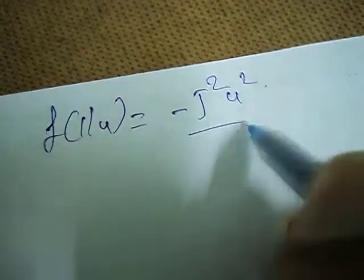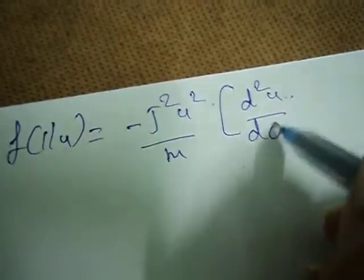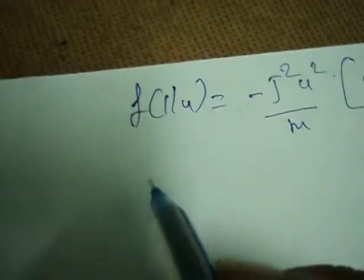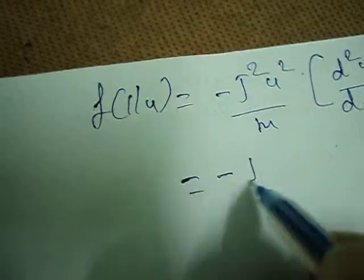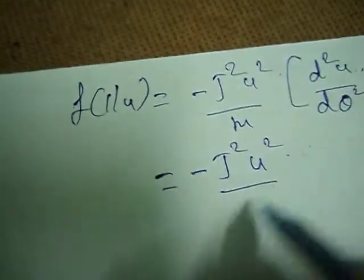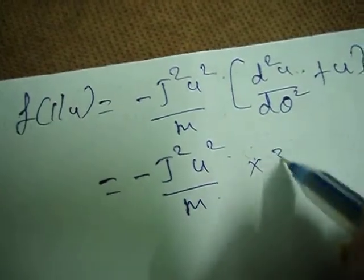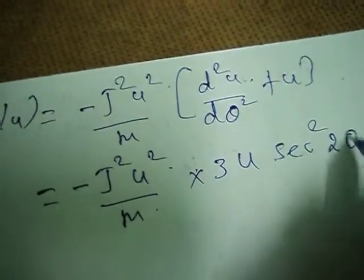From Binet's formula: F(1/u) = −J²u²/m · (d²u/dθ² + u). Substituting the above result, this equals −J²u²/m · 3u·sec²(2θ).